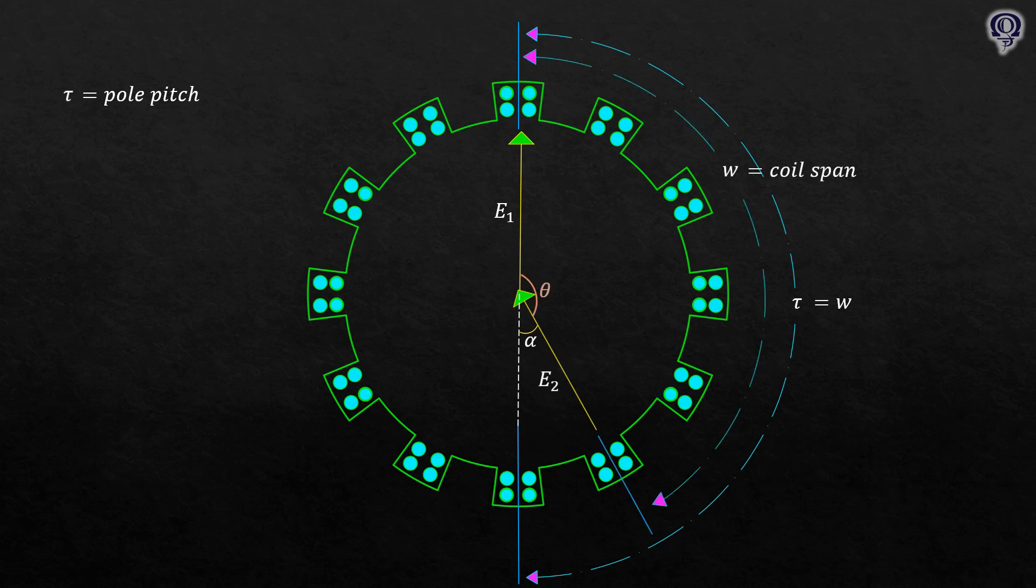This theta is the coil span in degrees. We can also express theta in terms of coil span per slots per pole times 180 degrees. You can see that tau is just 180 degrees as well.